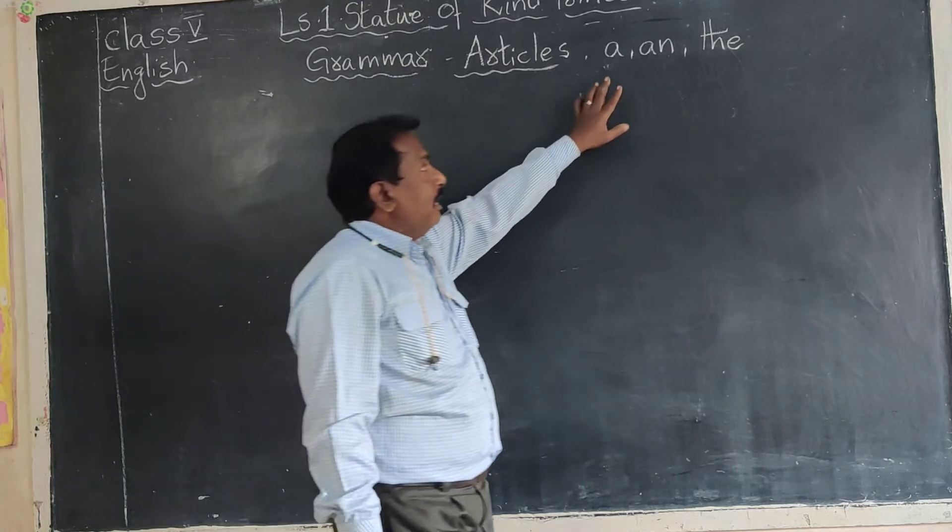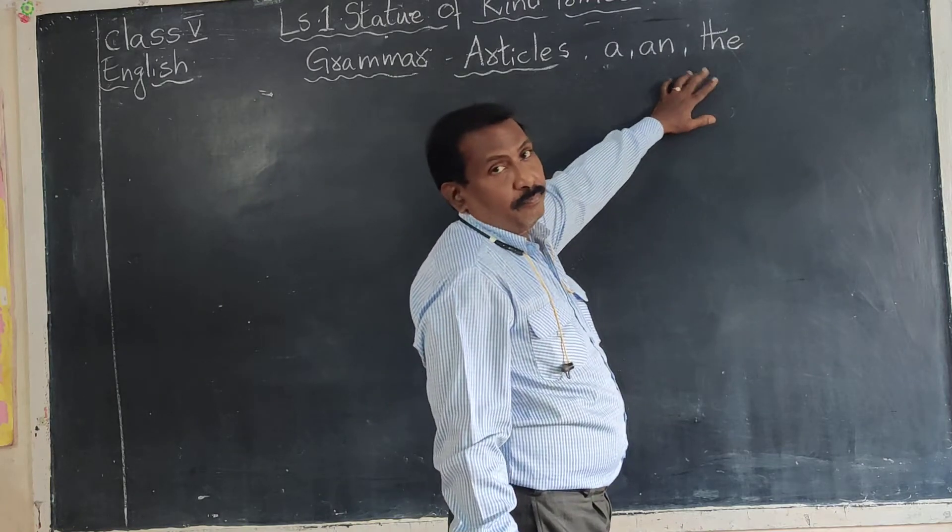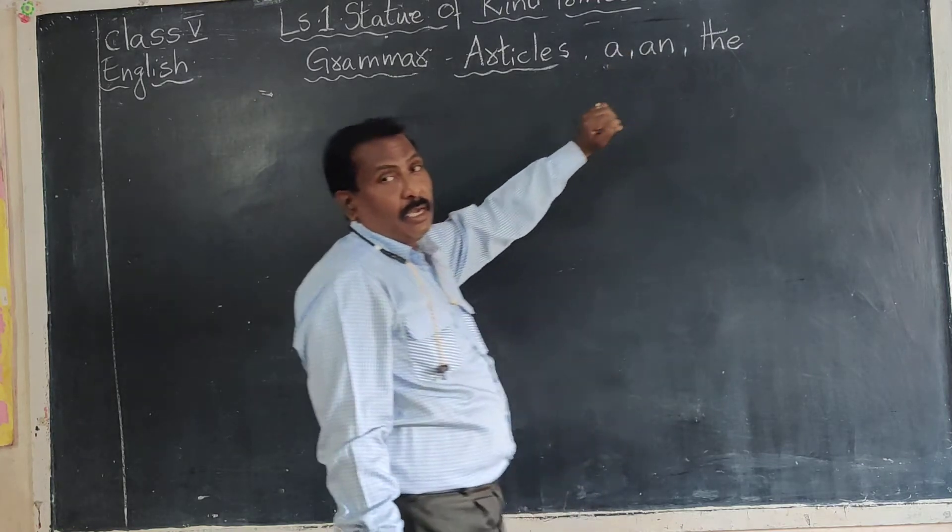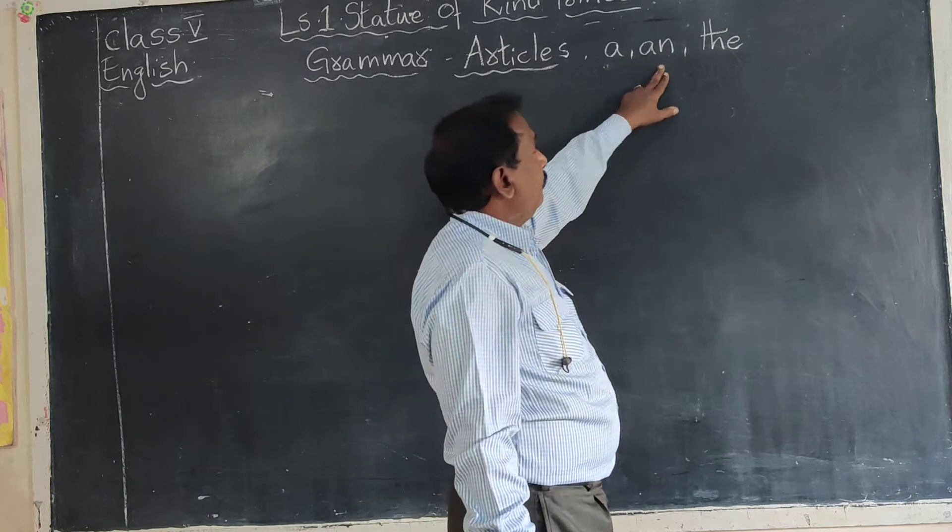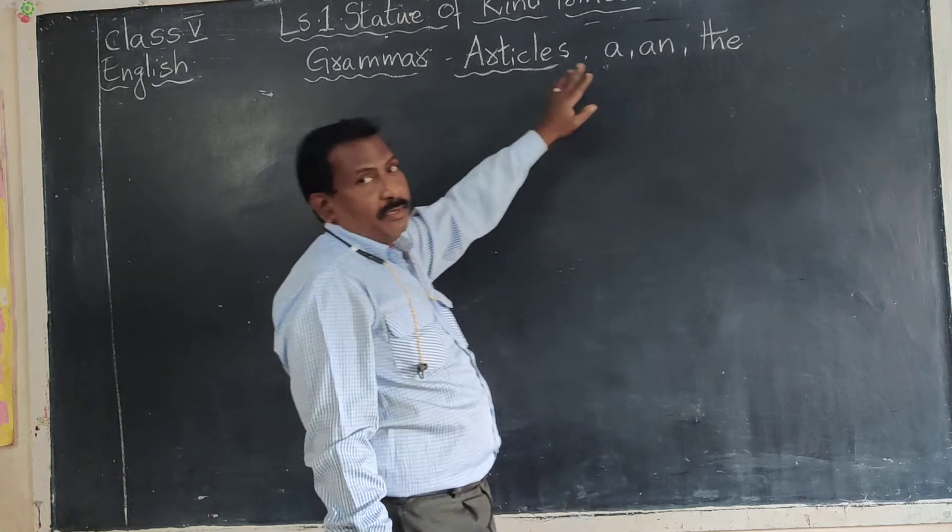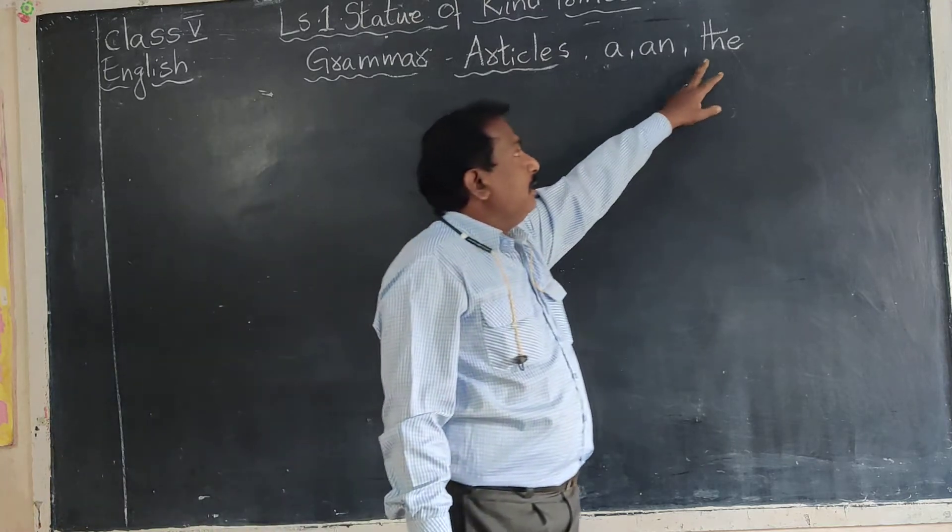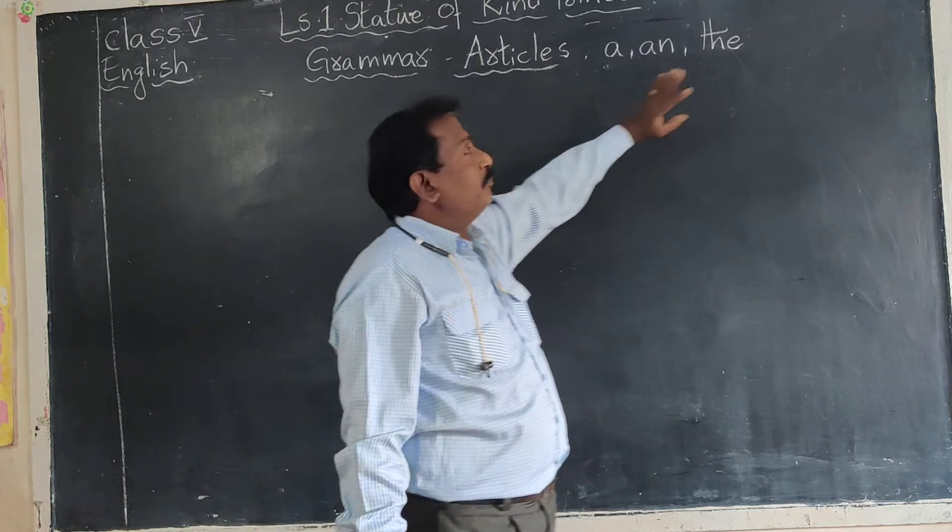See, A, An, and The - these three we call as articles. A and An are indefinite articles, and The is called the definite article.